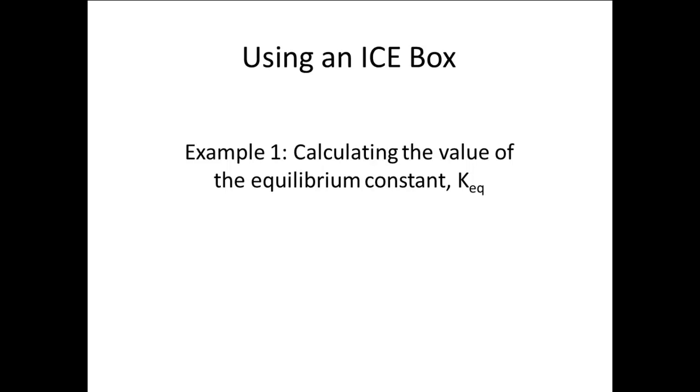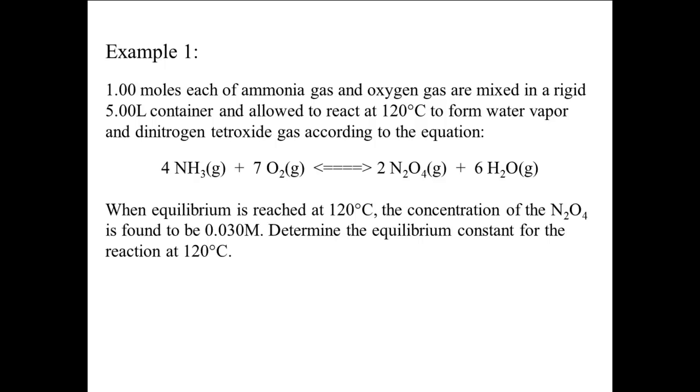Example 1: Calculating the value of the equilibrium constant Keq. 1.00 moles each of ammonia gas and oxygen gas are mixed in a rigid 5.00 liter container and allowed to react at 120 degrees Celsius to form water vapor and dinitrogen tetroxide gas according to the equation: 4 NH3(g) plus 7 O2(g) in equilibrium with 2 N2O4(g) plus 6 H2O(g).